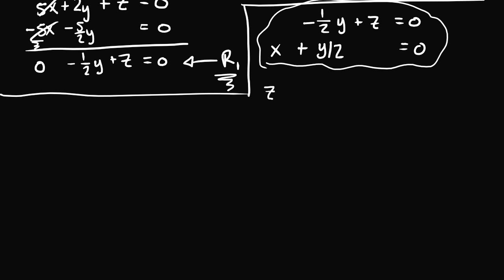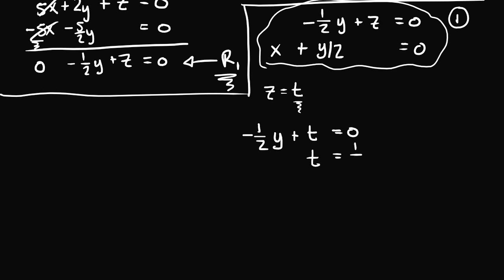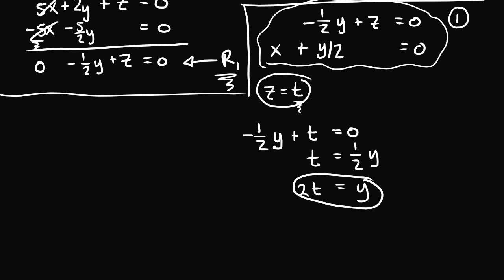Let z equal t, the parameter t, to represent any real number. From the first equation, negative one-half y plus t equals zero. Adding one-half y to both sides gives t equals one-half y, and solving for y gives y equals 2t. So z equals t and y equals 2t. I can plug these two into the second equation to solve for x.